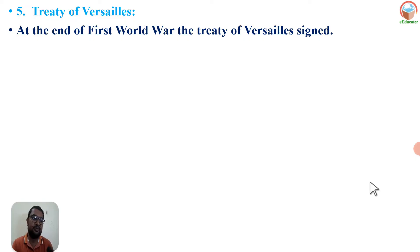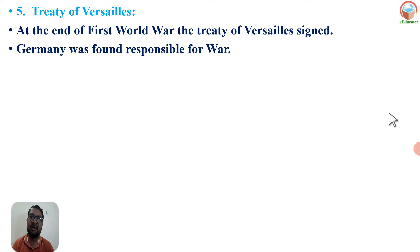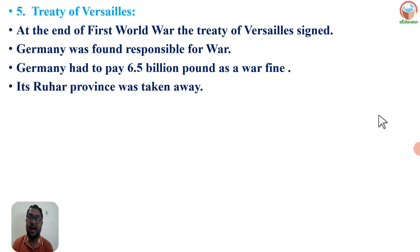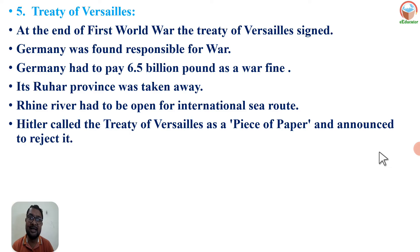Fifth factor — Treaty of Versailles. At the end of World War I, the Treaty of Versailles was signed. Germany was found responsible for the war and had to pay 6.5 billion pounds as war fine. The Ruhr province and its mineral resources were taken away. Rivers were opened for international sea routes. Hitler called the Treaty of Versailles a piece of paper and announced he would reject it.